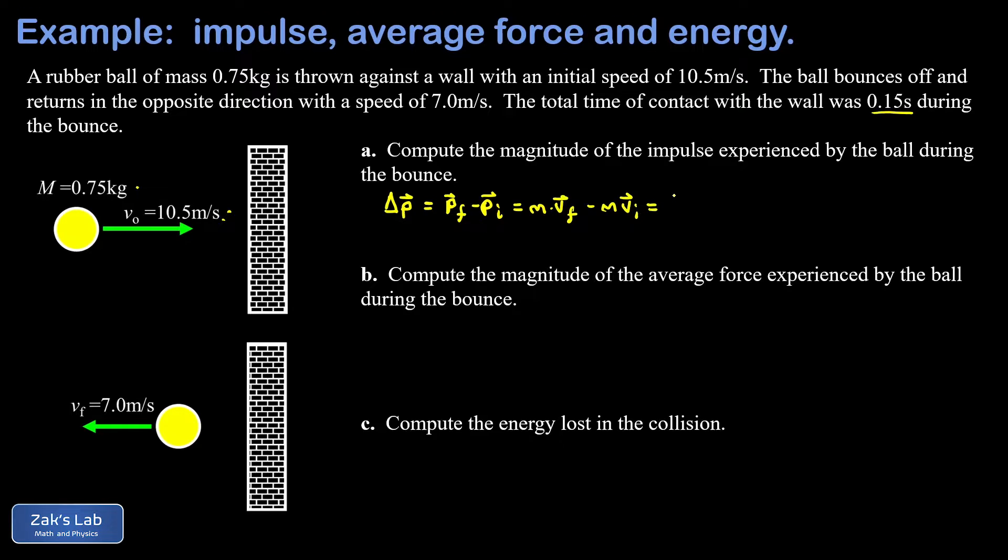Our mass is 0.75 kilograms, our final velocity is negative 7 (leftward), our mass is 0.75 and our initial velocity is positive 10.5 meters per second. When we run the numbers we get 13.125 kilogram meters per second.